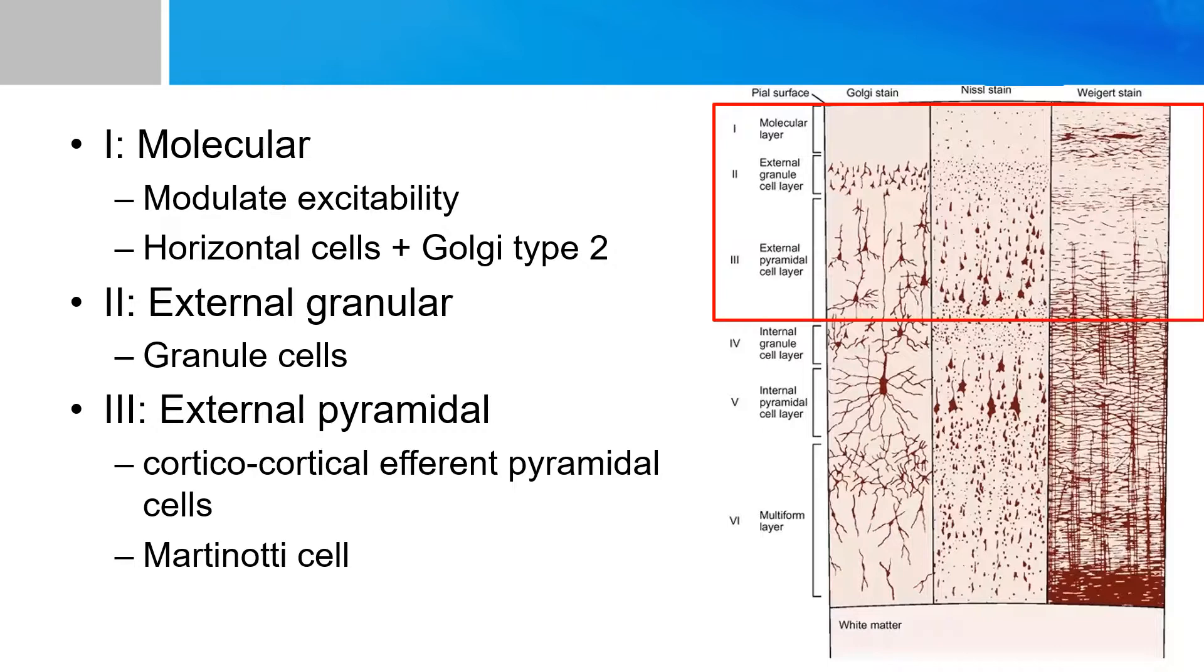So when the pyramidal neurons which are present in layer three and five starts to get overexcited, the Martinotti cells will start to send inhibitory signals to the surrounding neurons. And hence, they're found in both internal and external pyramidal layers.